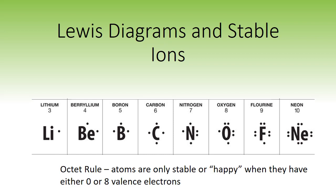We also have the octet rule, which says atoms are only happy or stable when they have either zero or eight valence electrons. Out of all the examples we just looked at, only group 8 is stable because it has a full outer shell with eight electrons. All the other atoms need to do something to become happy or stable.